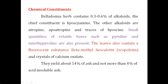Chemical constituents: it contains 0.3 to 0.6% alkaloids. The major constituent is hyoscyamine, which should not be less than 0.3%. Other alkaloids include atropine, apoatropine, and hyoscine. Atropine is well known for its anticholinergic property; hyoscine is effective in motion sickness. The drug also contains volatile bases — pyridine and N-methylpyrrolidine — similar to how Rauwolfia contains antihypertensive bases.